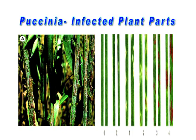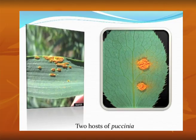The reproduction of Puccinia follows a macrocyclic (complex) cycle. The entire Puccinia life cycle is completed on two hosts — wheat and barberry — and produces five types of spores throughout the cycle.